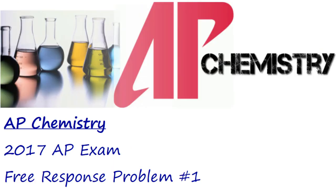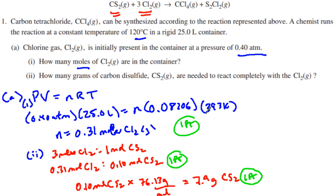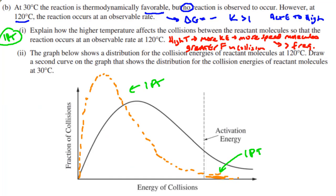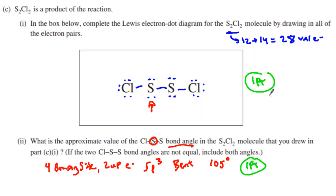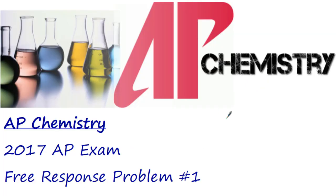That is the 2017 AP Chemistry exam, free response, problem number one. Let's review the points: one point for A1, two points for A2 — three points total; one point for B1, two points for B2 — six points total; a seventh point for C1, eighth point for C2, ninth point for D1, tenth point for D2. It's a ten-point problem. Make sure you let me know how you did. See you tomorrow.